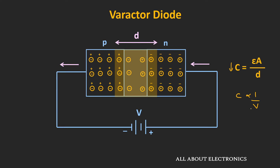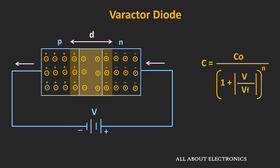Looking at the exact relation, the capacitance can be given by the expression where V is the applied reverse bias voltage, Vf is the forward voltage or built-in voltage of the diode, and C0 represents the capacitance of the diode when it is unbiased. In this equation, the value of N depends on the doping profile of the varactor diode. Based on the doping profile, there are two types of varactor diodes.